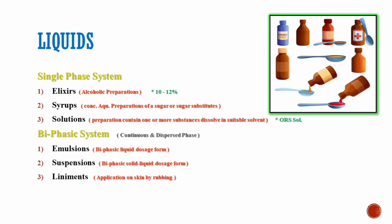Liquid dosage forms are divided into two main types: the single-phase system and the biphasic system. The single-phase system consists of elixirs, which are alcoholic preparations that contain 10 to 12 percent of alcohol, and syrups, which are concentrated aqueous preparations of sugar and sugar substitutes. The third one is solutions, which are preparations that contain one or more substances dissolved in a suitable solvent.